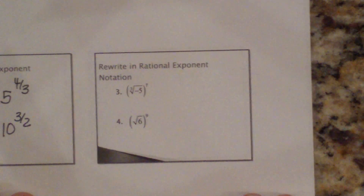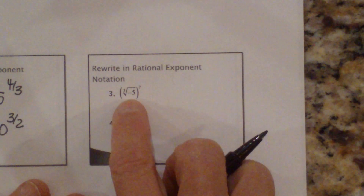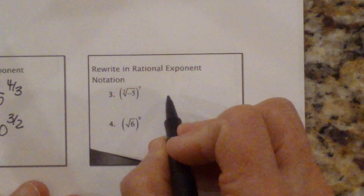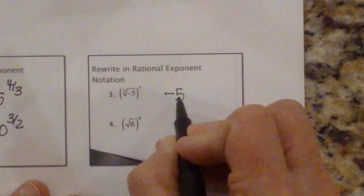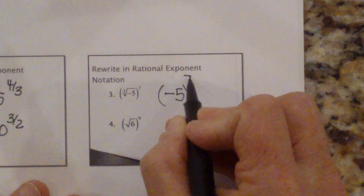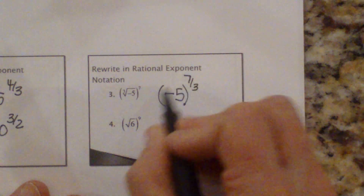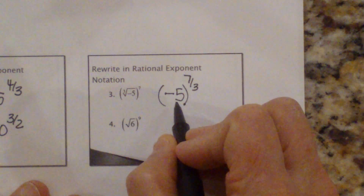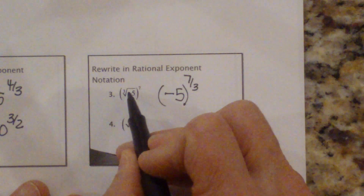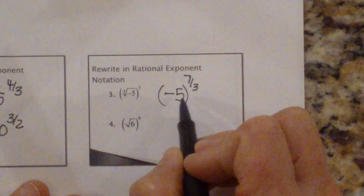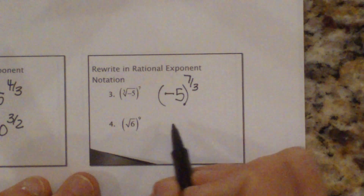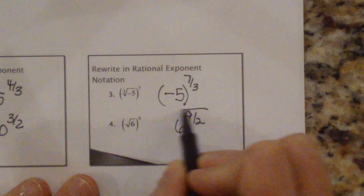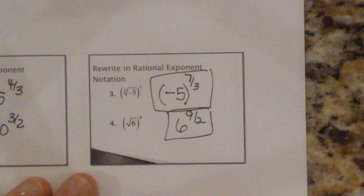Okay, so now let's do it the opposite way — take these rational exponents and write them back as radicals. So we have negative 5 quantity to the 7 thirds. I had to put parentheses around that because I'm taking the cube root of negative 5, and the negative is inside the radical, so I have to account for that. And then this one is 6 to the 9 halves. So that's how you rewrite both of those.